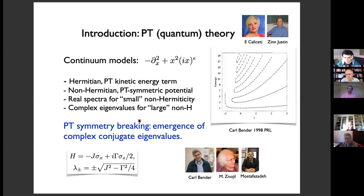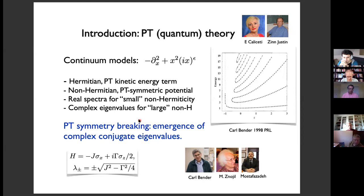This transition from purely real spectrum to complex conjugate spectrum is called the PT symmetry breaking transition. When the spectrum is purely real, the eigenstates of your Hamiltonian can be chosen to be simultaneous eigenstates of the anti-linear PT operator. Once you have complex eigenvalues, the eigenstates no longer remain eigenstates of this operator due to anti-linearity. Many of these key features are also found in even the simplest matrix examples — finite dimensional models — such as a two-by-two Hamiltonian h = −jσ_x plus a purely imaginary z-field.